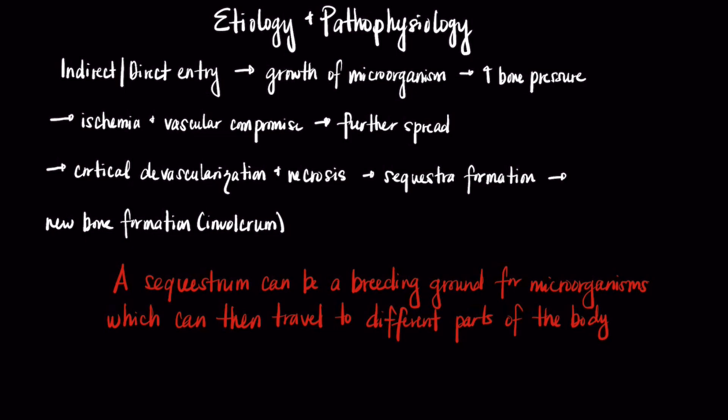Here is a flow chart that details the pathophysiology and progression of osteomyelitis, starting with either indirect or direct entry of microorganisms. Once microorganisms gain entry into the bone, they begin to proliferate, increasing bone pressure due to the fact that bone itself is a rigid and inflexible space. This increase in bone pressure leads to decreased circulation, which results in ischemia and vascular compromise.